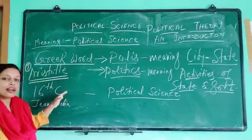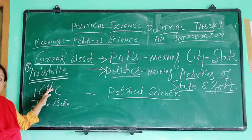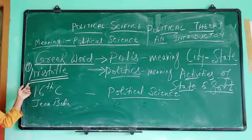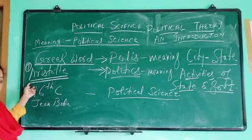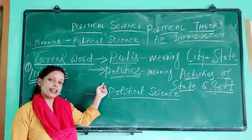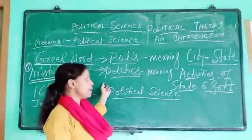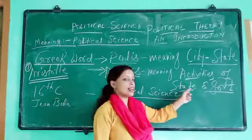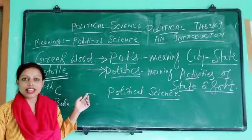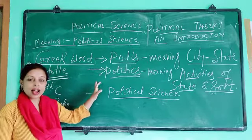Then a political philosopher came into the political science world and he is also known as the father of political science. His name is Aristotle. Aristotle gave a new word for political science: 'politics.' He said politics and polis are the same in meaning, referring to the activities of the state and government. The activities revolving around state and government are known as 'polis' and 'politics' — these meanings are exactly the same.